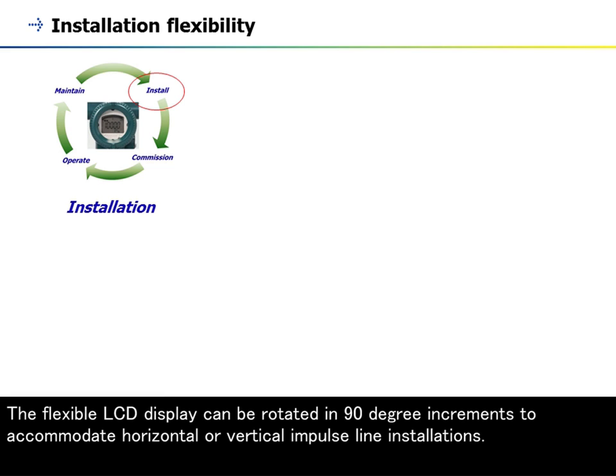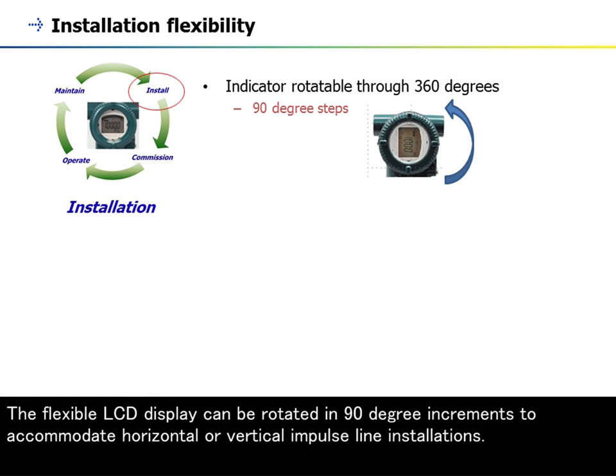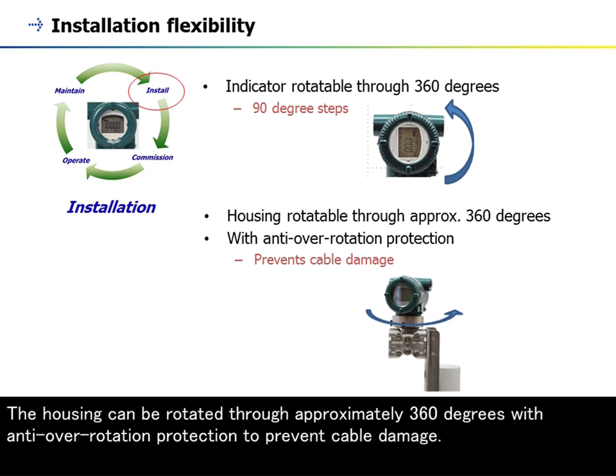The flexible LCD display can be rotated in 90-degree increments to accommodate horizontal or vertical impulse line installations. The housing can be rotated through approximately 360 degrees with anti-over-rotation protection to prevent cable damage.